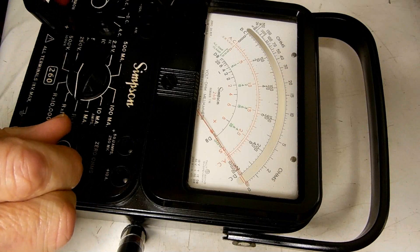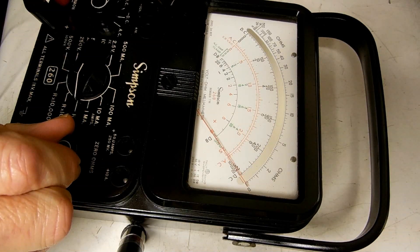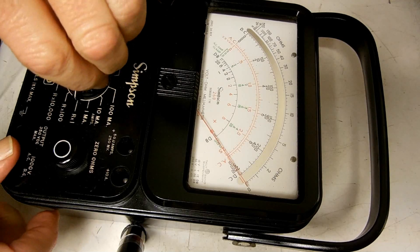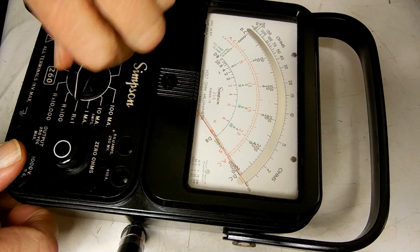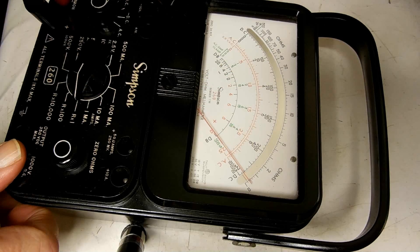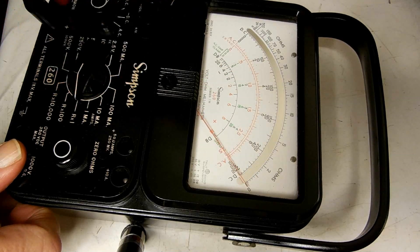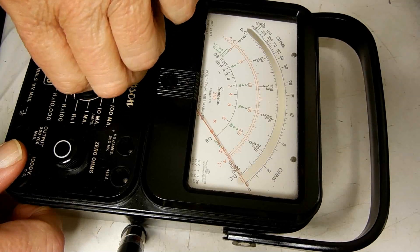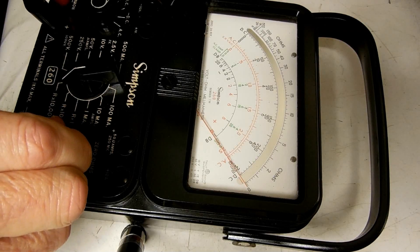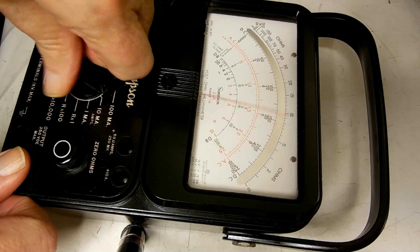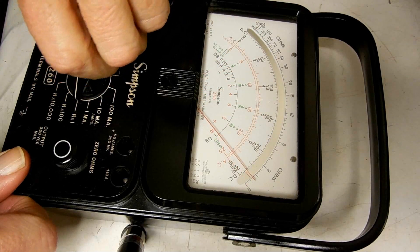When I got it all back together, I did find that there was a problem. Here I've already fixed the problem, but what was going on is when I zeroed the needle and then rotated the selector to one side or the other, the needle would not return to zero. Well, here it does. When I have it set up and then rotate the switch from one side to the other, it returns to where it should.